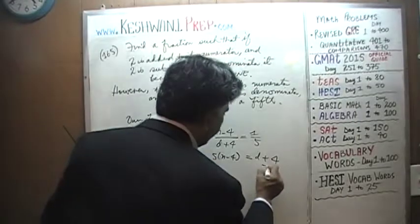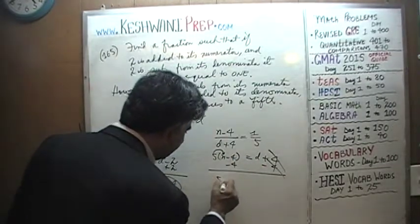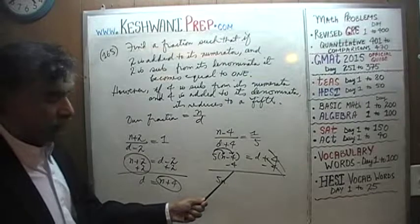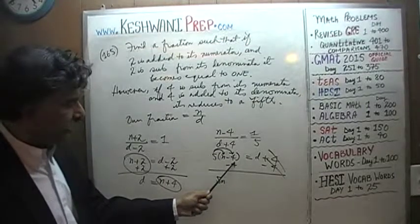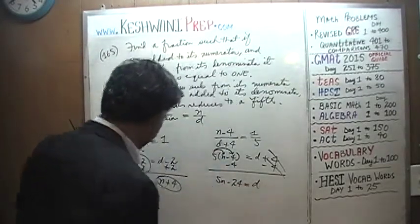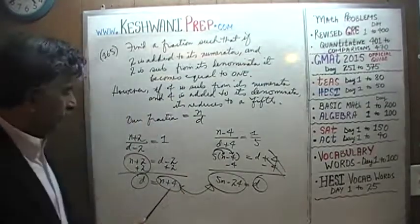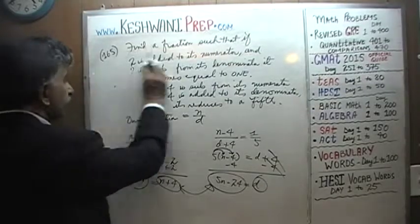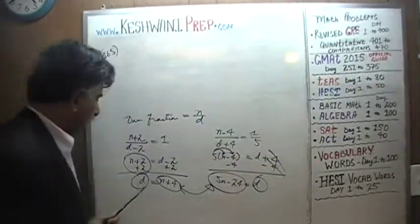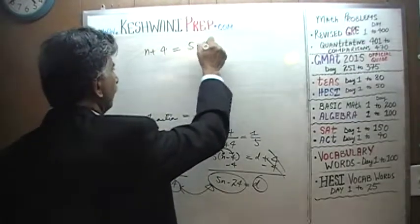Similarly, bringing 4 to the other side — the 4s cancel — and expanding, 5 times negative 4 is negative 20; negative 20 and negative 4 gives negative 24, so d equals 5n minus 24. So we have d equals n plus 4, and d equals 5n minus 24; these two quantities must equal each other. We equate them and solve for n: n plus 4 equals 5n minus 24.